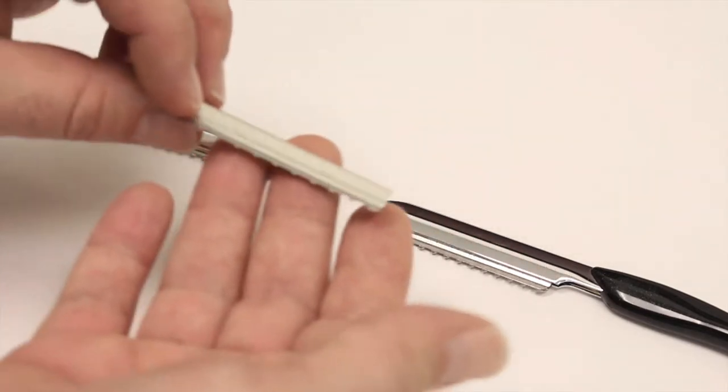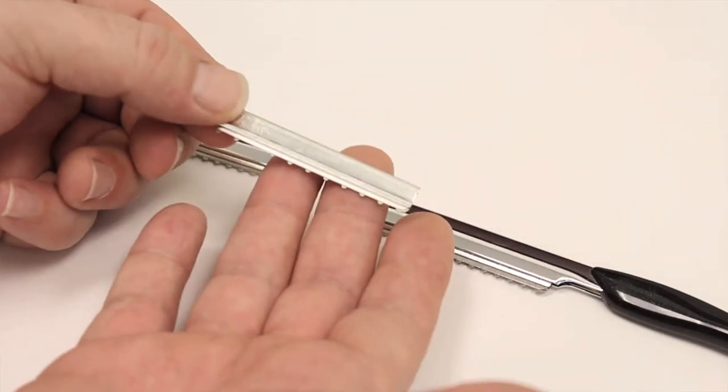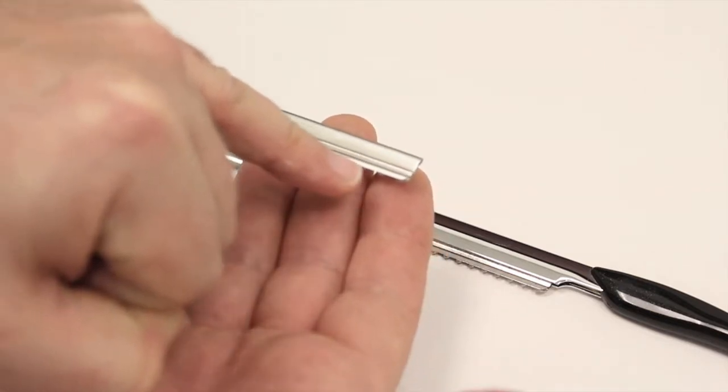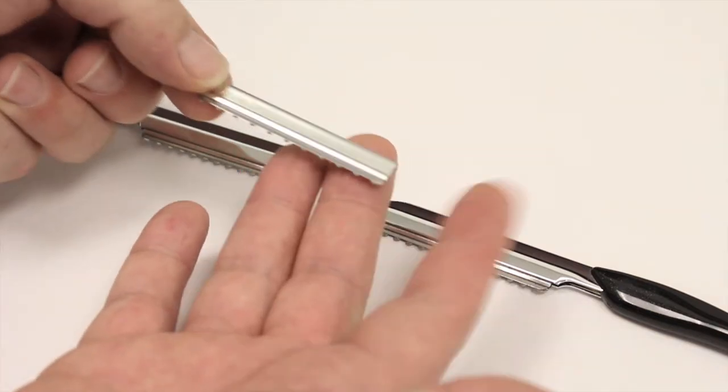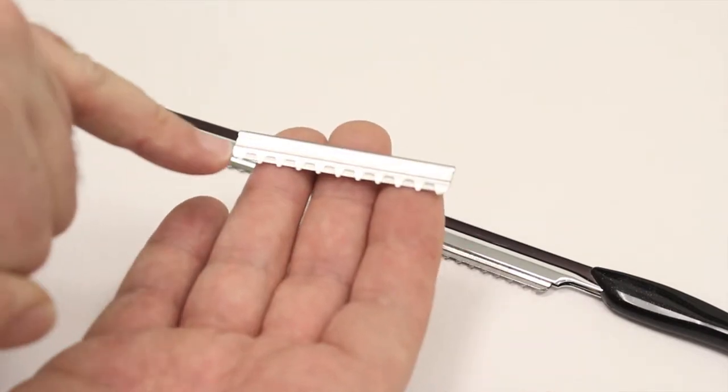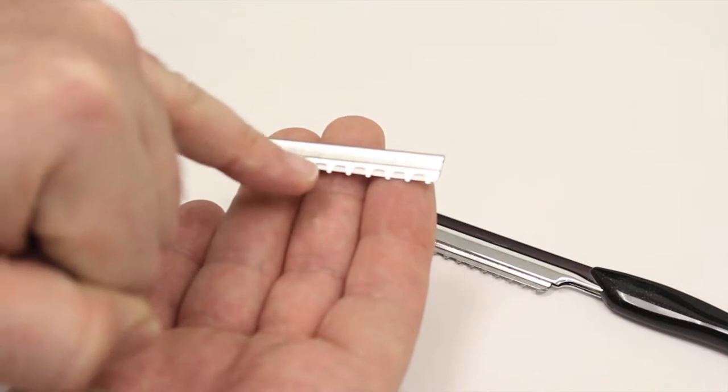So basically when we look at the blade here, from this side, you can see all of the blade itself. So when we turn the blade over the other way, you can see the actual definite guard area on here.